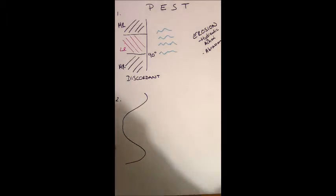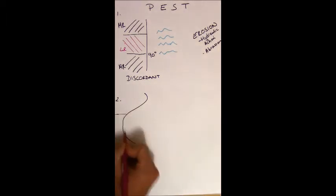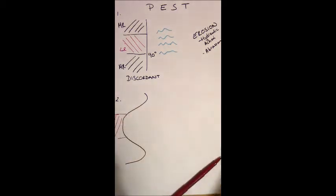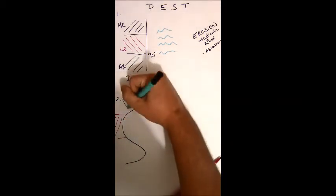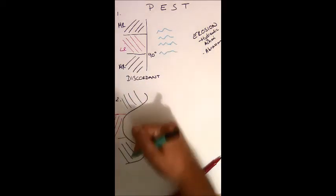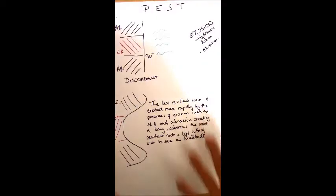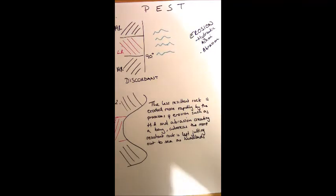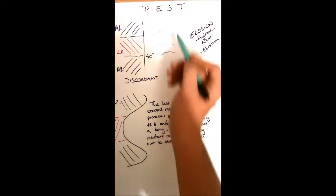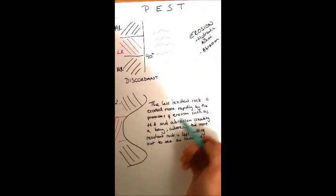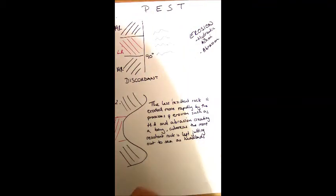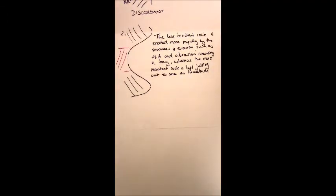So we might end up with it looking a bit like that, where we still have our less resistant rock here and then our more resistant rock left sticking out to sea like that. In the exam, write something along the lines of: the less resistant rock is eroded more rapidly by the processes of erosion such as hydraulic action and abrasion - remember I'm explaining it but I'm also trying to get that terminology in and I've named the processes - creating a bay, whereas the more resistant rock is left jutting out to sea as headlands. A common mistake that many students make in the exam is to assume that their job is done at this point.